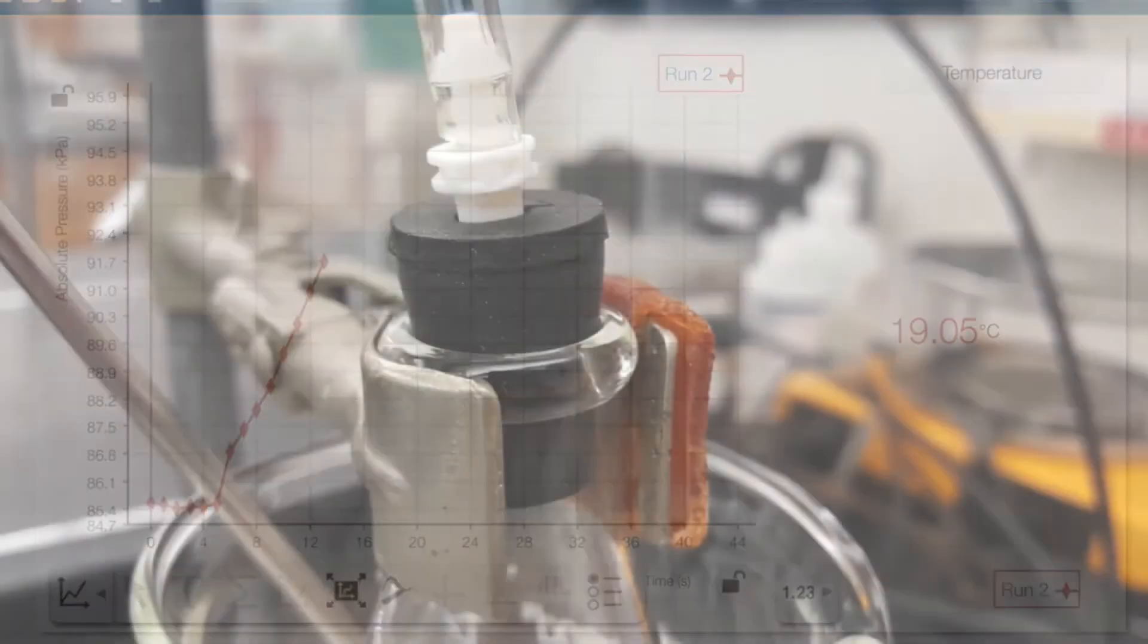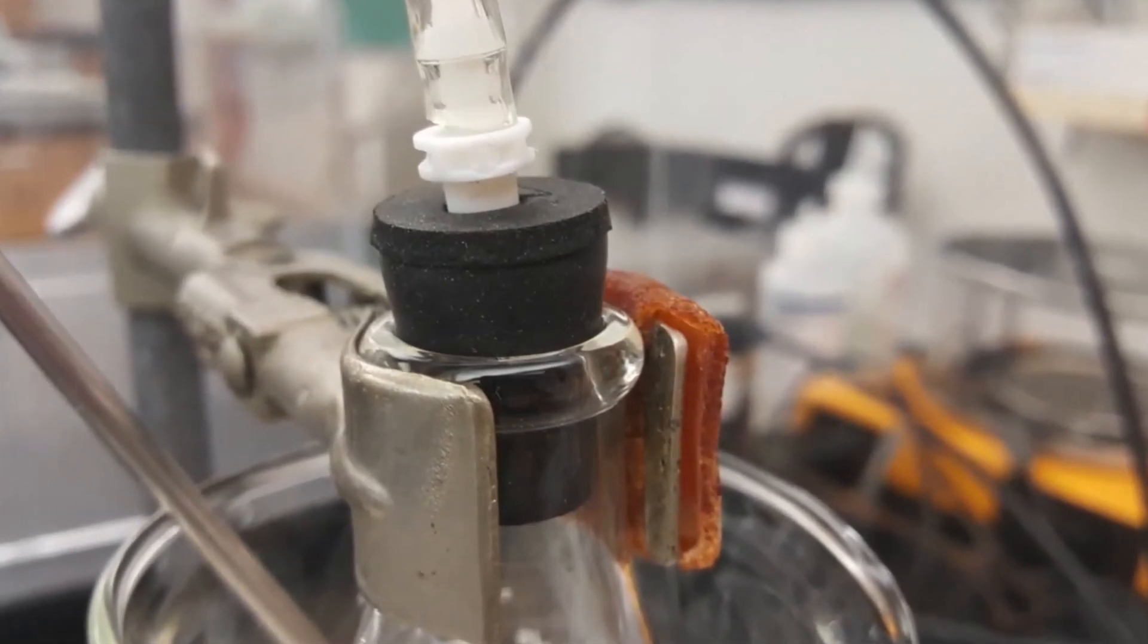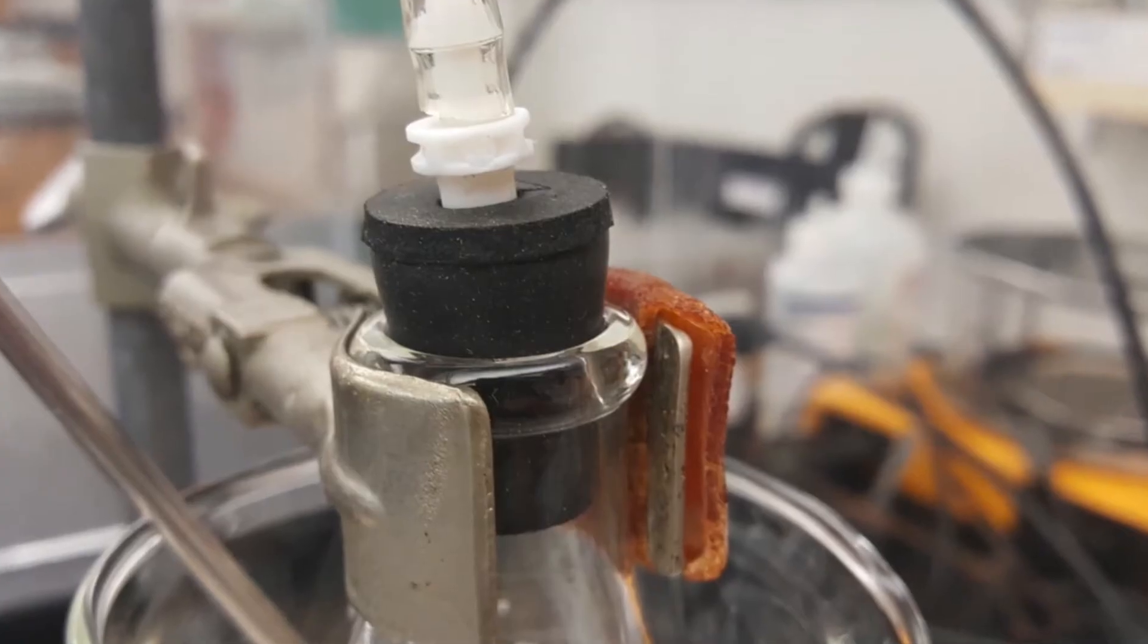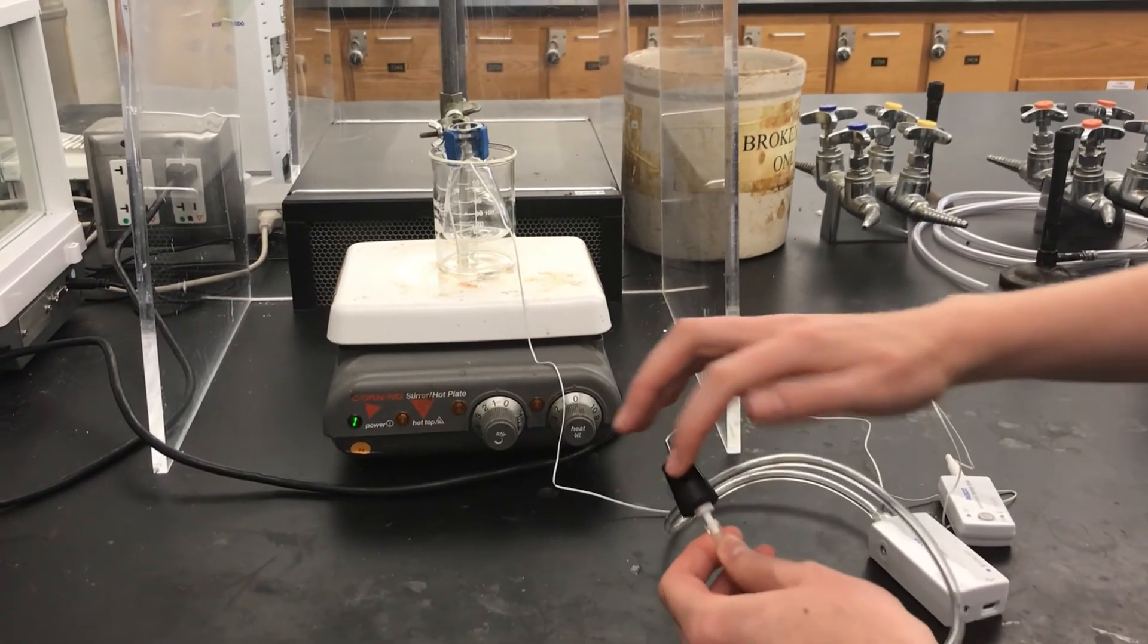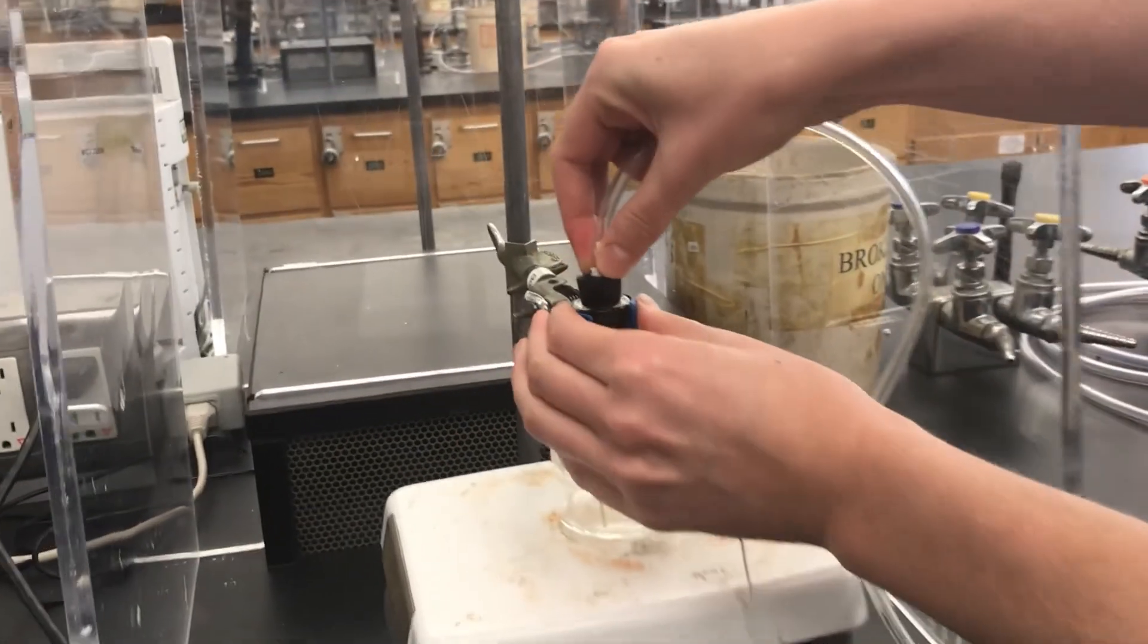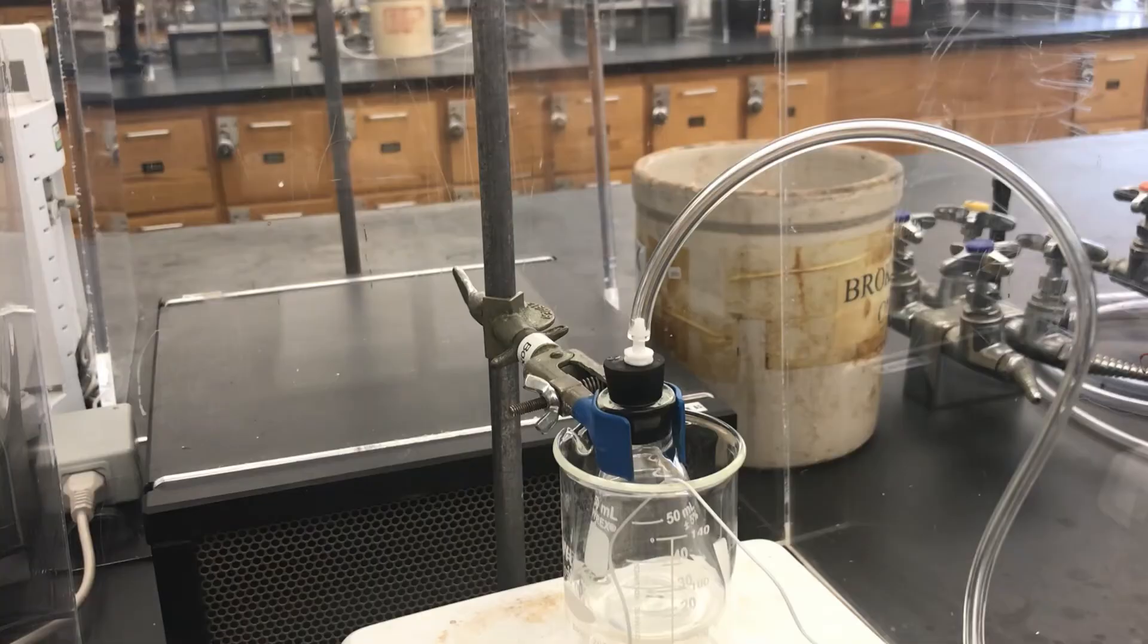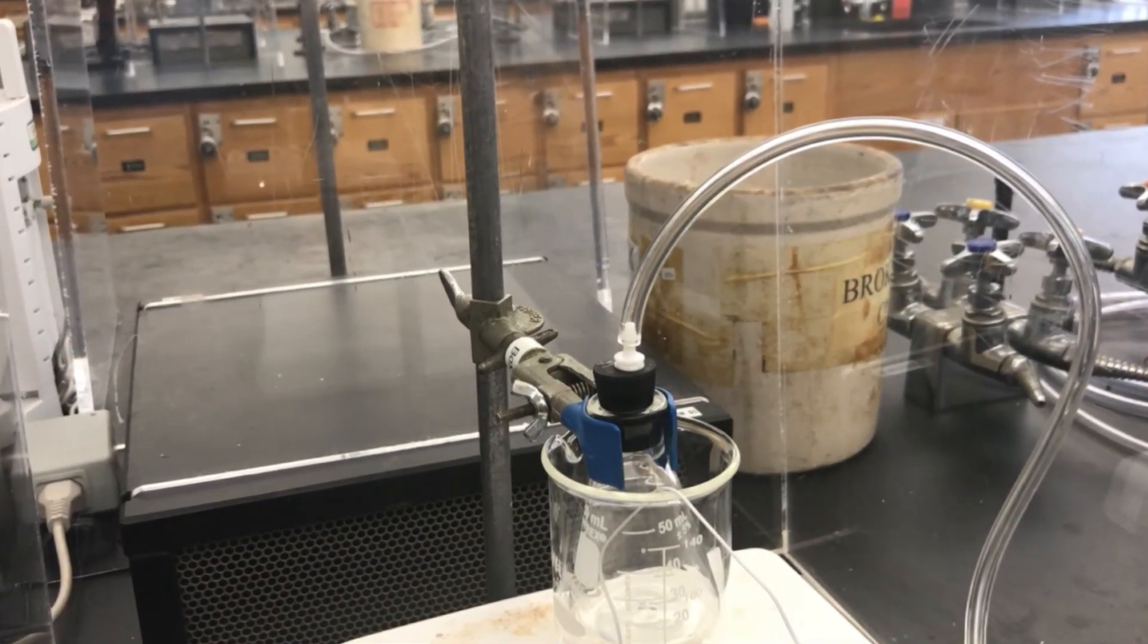If the pressure is not increasing measurably you'll want to check for leaks. One thing that's common is that the rubber stopper isn't actually securely inserted into the flask and one thing that can help is to wet the edge of the rubber stopper. Just get your finger wet and wipe it around the edge of the stopper and that can help it seal when you put it into the flask. You also have to insert it pretty firmly.